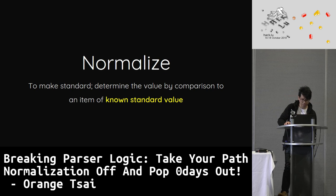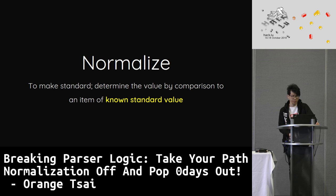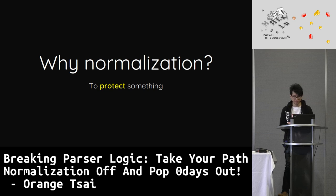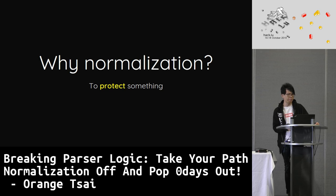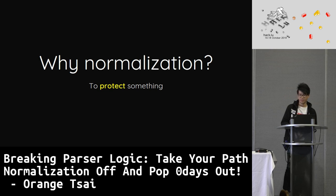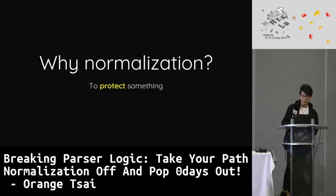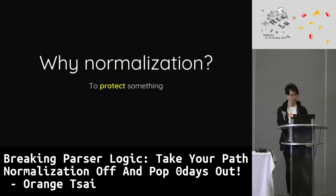Let's learn a new word: normalize — to make standard, to determine the value by comparison to an item of non-standard value. The definition is easy, but if every system has their own standards, there must be problems. Why normalization in security? It means you need to protect something. In order to fix a bug without impacting business logic, it's common to apply a workaround or filter instead of patching directly. To apply the filter, you need to parse the data first. But it's hard to implement a well-decided parser. Everyone follows RFC as their standard, but RFC defines the specification without telling you how to implement. So the more complicated the data format, the harder it is to parse.